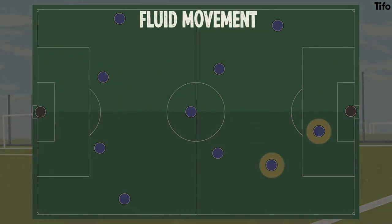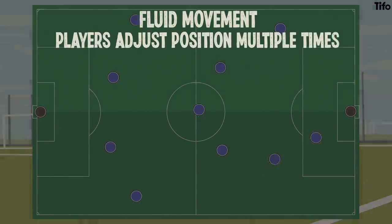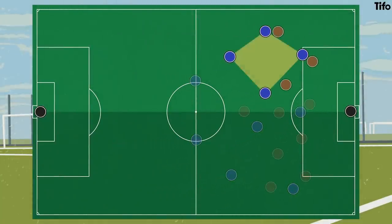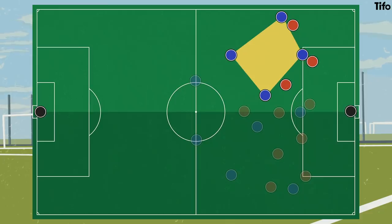With a fluid passing move, players will adjust their position multiple times. For example, if the base of a diamond suddenly runs to overlap the wide left, the wide right will drop into the base while the wide left moves across to the wide right, thus maintaining the shape and ensuring that there are always passing options available.